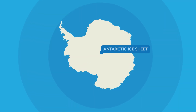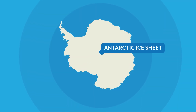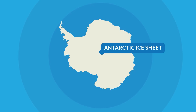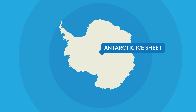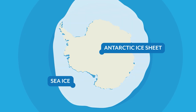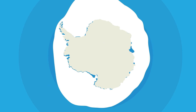This is the Antarctic Ice Sheet, a huge body of ice resting on bedrock and surrounded by the Southern Ocean. The ice sheet formed by a compaction of snowfall over millions of years. The surrounding ocean freezes in autumn to form a large cover of sea ice.